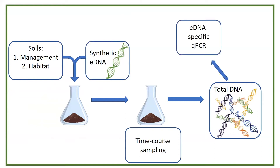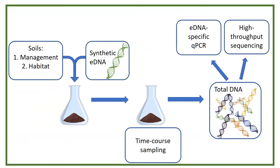Using those two different primer sites, I applied two different types of analysis to the same DNA. The first was an eDNA marker-specific quantitative PCR, which measures only the synthetic eDNA gene and tells me nothing about the rest of the community. The second technique was high-throughput sequencing, which tells me not only how much synthetic eDNA is present, but also what that looks like in the context of the larger bacterial community from the soils.